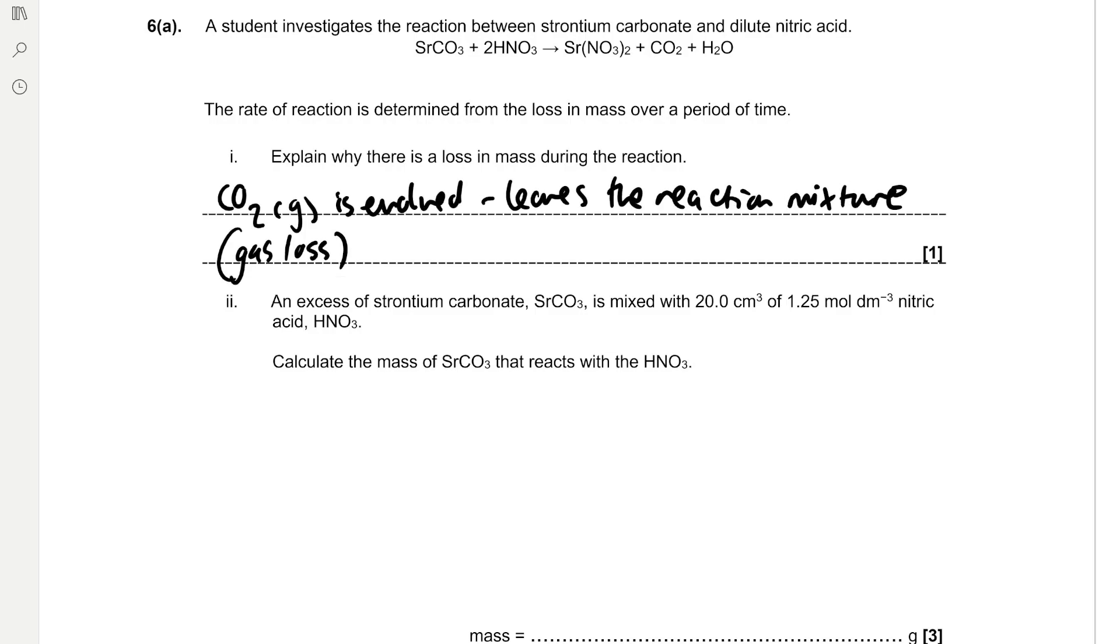An excess of strontium carbonate is mixed with 20 cm³ of 1.25 mol per dm³ nitric acid. Calculate the mass of strontium carbonate that reacts with the HNO3. First find the moles of nitric acid using moles equals concentration times volume. The moles equals 20 cm³ divided by 1000 to convert to dm³ multiplied by 1.25 mol per dm³, which is 0.025 mol. The ratio of nitric acid to strontium carbonate is 2 to 1, so we divide the moles of nitric acid by 2, which is 0.0125 mol.